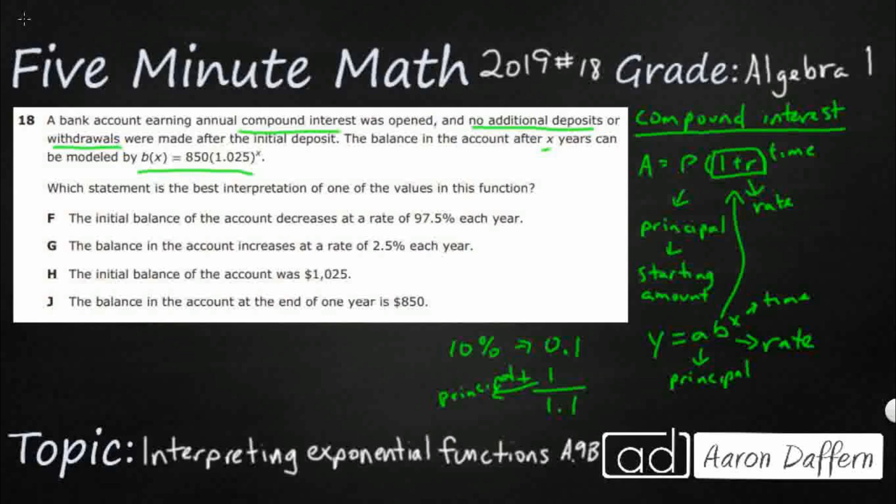All right, so let's see what we have here. We've got 850. So b of x, 850, 1.025 to the x power. So this is going to be our principal, the starting amount. Now this rate here is going to be 1.025.